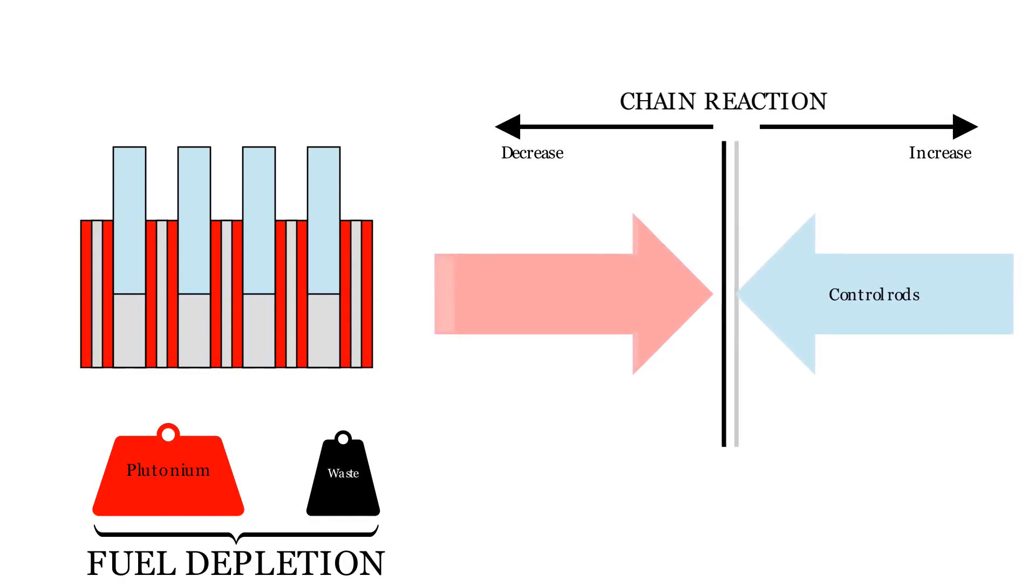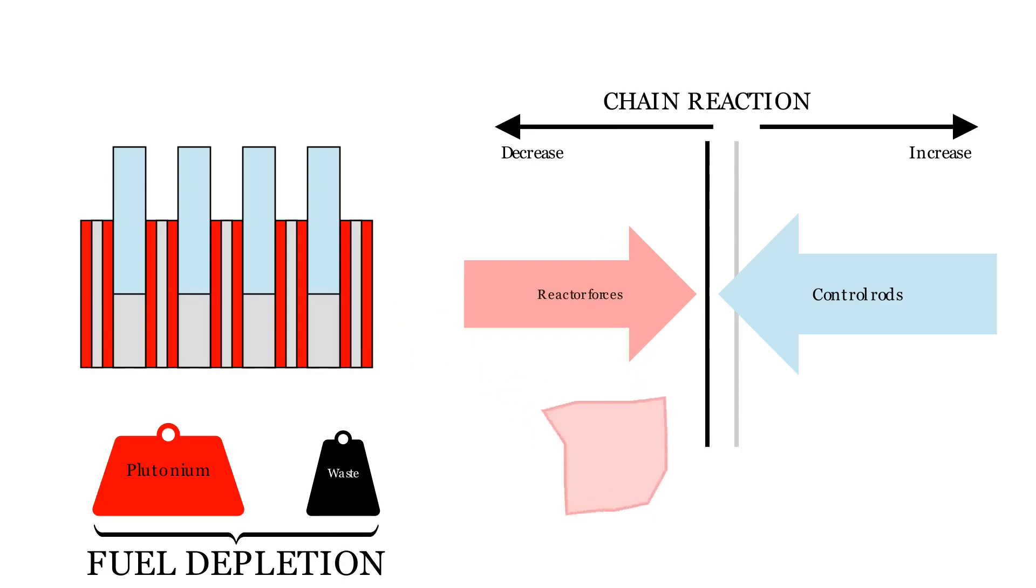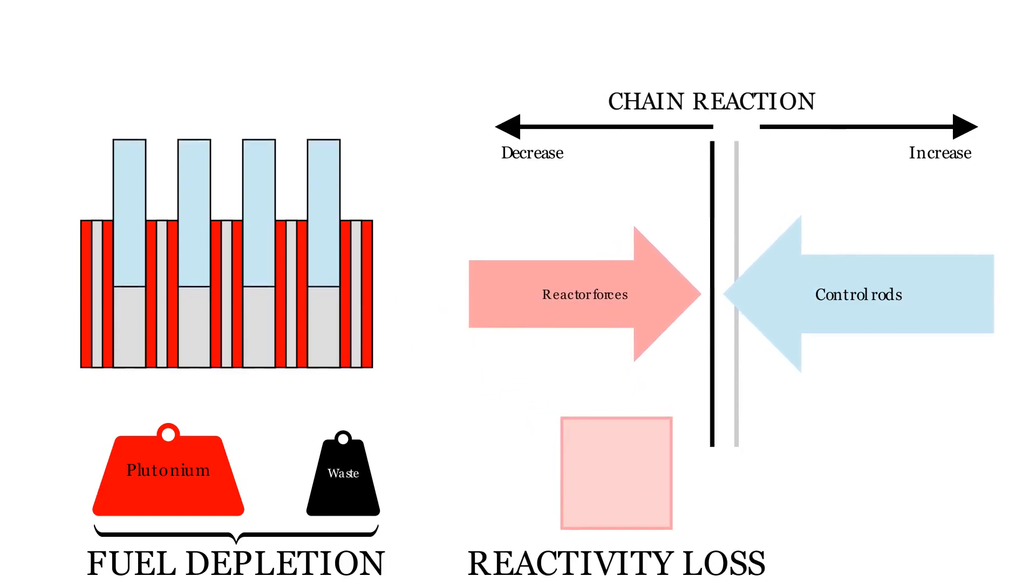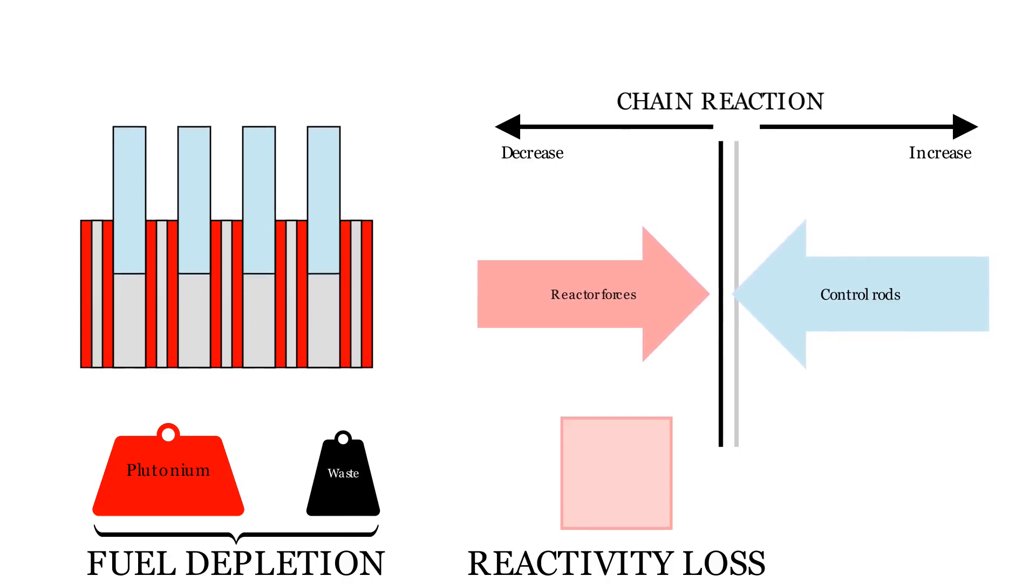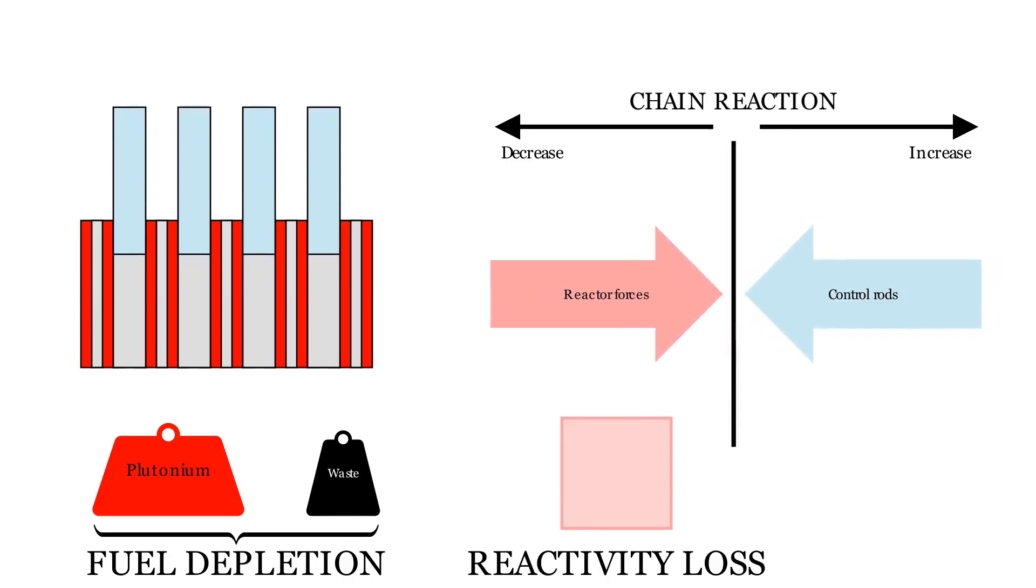The result of all that being that the reactor has lost some force, as if it was tired. This lost force, due to fuel depletion, is named reactivity loss, and is counterbalanced by the extraction of the control rods that favor the chain reaction and keep the balance between forces.